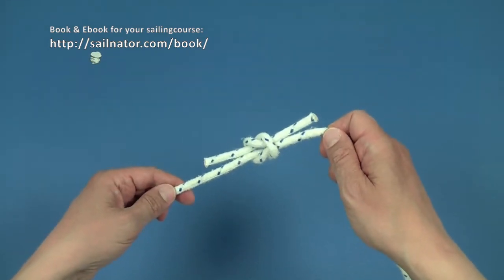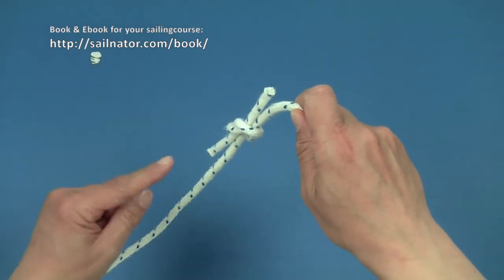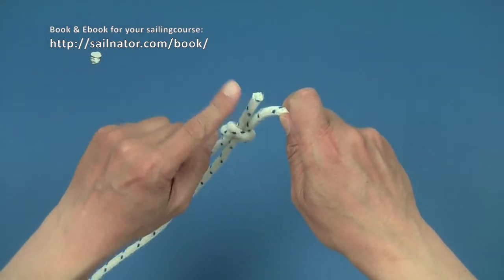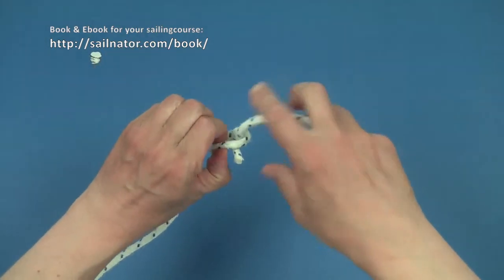We can open the square knot by holding one of the connected lines and pull the end that is parallel to it. That even works if the knot was pulled together very tight over some time.